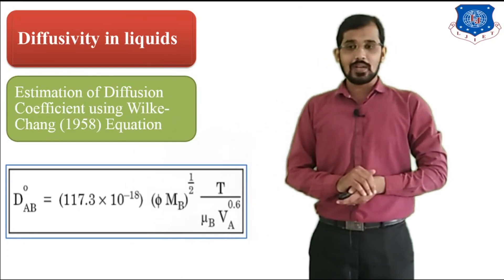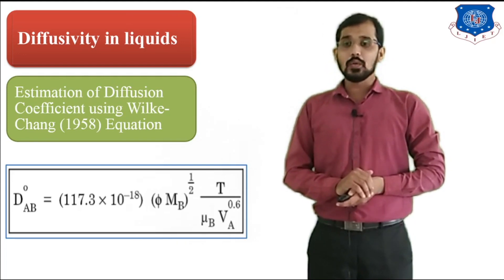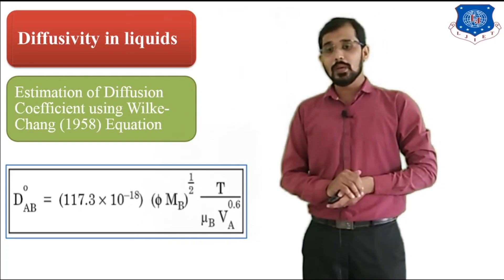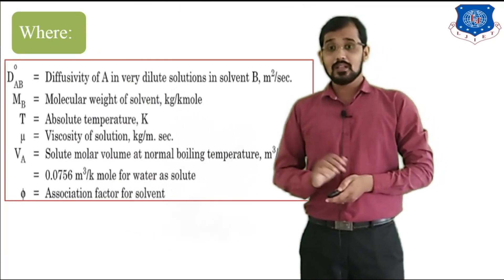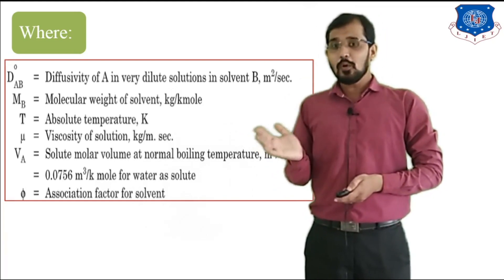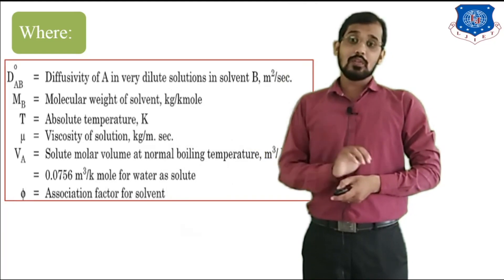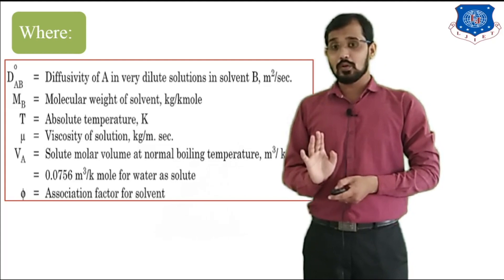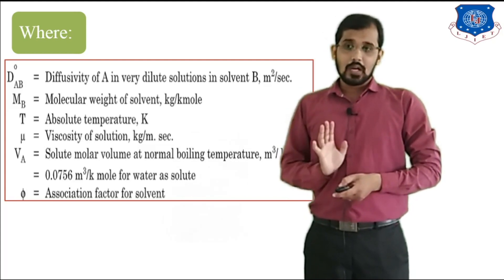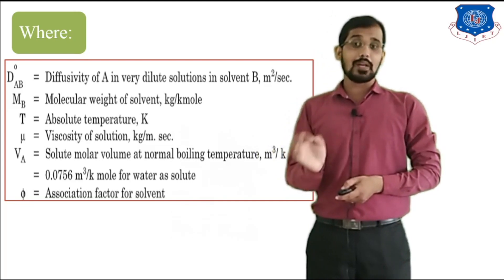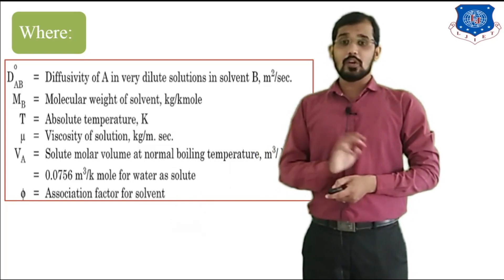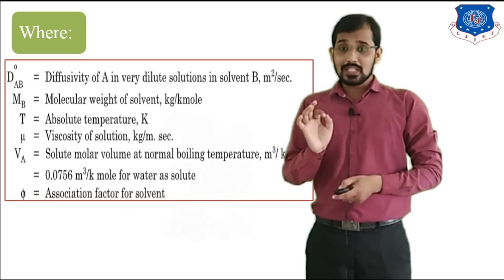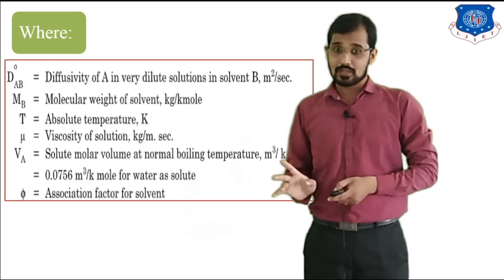According to the Wilke-Chang equation: DAB° equals 117.3 × 10⁻¹⁸ × φ × MB^(1/2) × T divided by [μB × VA^0.6]. DAB is the diffusion coefficient of component A with respect to B, with unit m²/s — note this differs from the Gilliland equation where the unit was cm²/s. MB is molecular weight of the solvent in kg/kmol, T is absolute temperature in Kelvin, and μ is the dynamic viscosity of the solution in kg/(m·s).